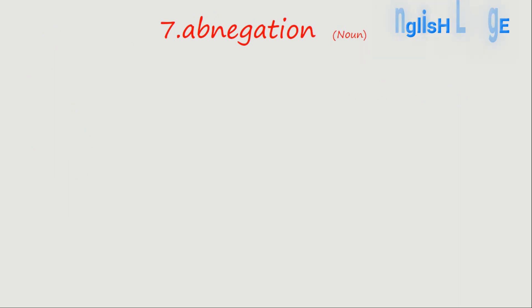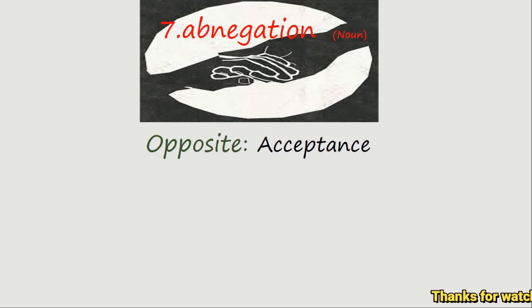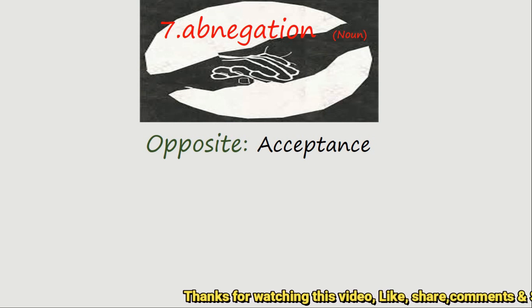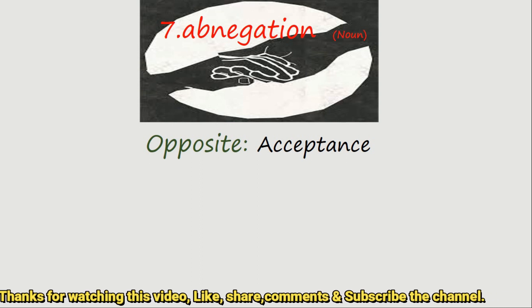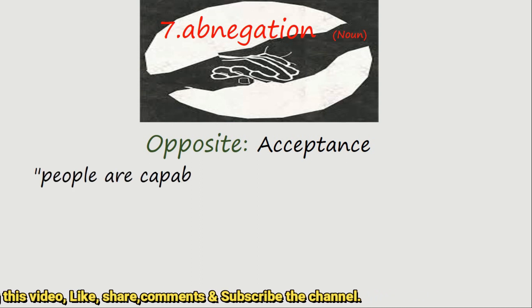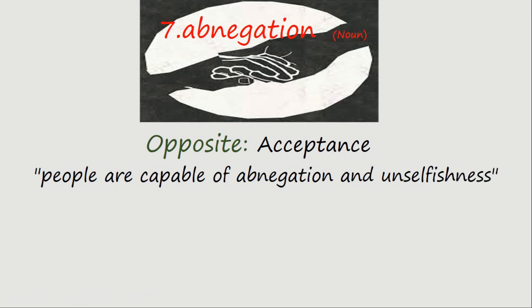Now word number seven: abnegation. And this is the noun. To guess the meaning of the word, there is an image. The opposite is acceptance. By this time, I think you get the meaning of the word. Example sentence: 'People are capable of abnegation and unselfishness.' This is the sentence to guess the meaning.